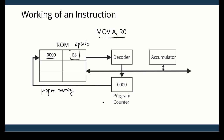An instruction is made up of either one part consisting of just an opcode, which is like a verb, and in some cases it may also have an operand, which is like a noun. For example, I can give an instruction like 'go' or 'go home' — 'go' is the verb and 'home' is the noun. Similarly, we have an opcode and an operand. In this case, we have only the opcode with no operand.